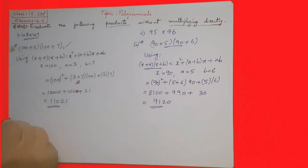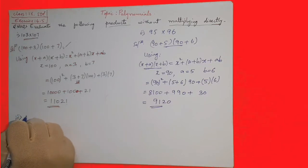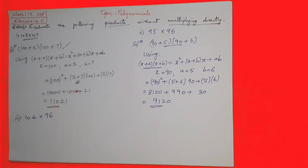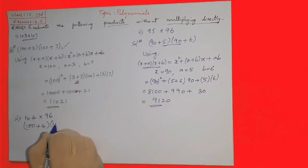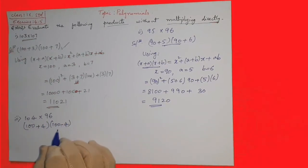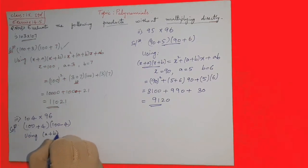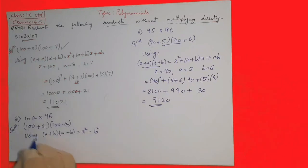Now the last question, the third one: 104 into 96. We can write this as 100 plus 4 into 100 minus 4. a plus b into a minus b is equal to a square minus b square. Here a is 100 and b is 4.